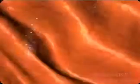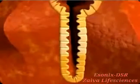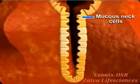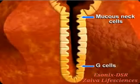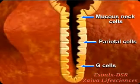The inner surface of the stomach is formed into numerous gastric pits from which acid is secreted. The cells lining the gastric pits are mucus neck cells, which secrete mucus; the G cells, which secrete gastrin; and the parietal cells, which secrete hydrochloric acid.